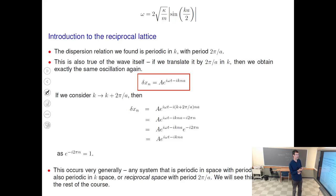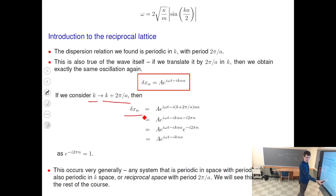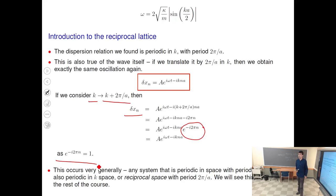If you plug in k plus 2π/a instead of k, you get exactly the same displacement delta_x_n — it doesn't change. The exponential factor that appears is just one, so it's the same solution. You can use k or k plus 2π/a: no matter which, the positions of actual atoms will be exactly the same. There is a similarity here to the lattice itself: in real space we reproduce the lattice by shifting by a, and in k-space we reproduce the same solution by shifting by 2π/a.